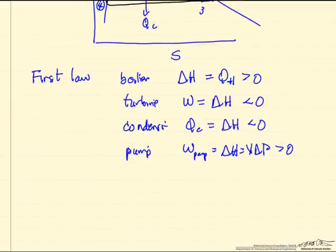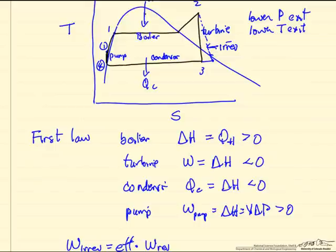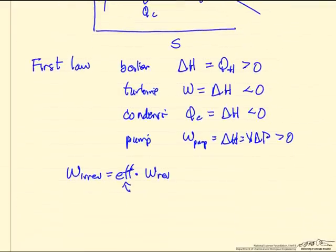And so the work for the irreversible case is going to be some efficiency of the turbine times the work for the reversible case. So this is different from the overall efficiency of the cycle. This is due to the fact we run it irreversible. We need to know something about the process. We're running to the same final pressure, but we're going to end up not removing as much energy because the efficiency is less than one for the turbine.